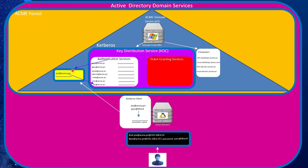The Authentication Services retrieves the username from the information sent and compares it to its database to ensure that user is in the list of authorized users added to Active Directory. If the name is not found, authentication fails and the server prompts Joe to re-enter his user ID. Assuming the name is valid, Authentication Services retrieves Joe's stored password, applies the same hashing algorithm, and compares the two hashes. If they don't match, authentication fails and the server prompts Joe to re-enter his password.